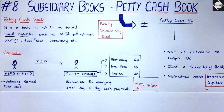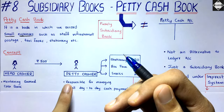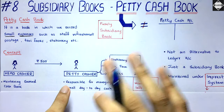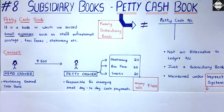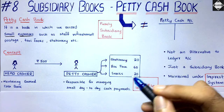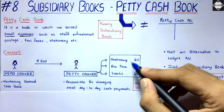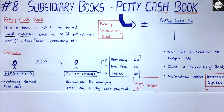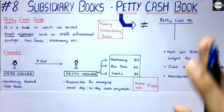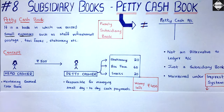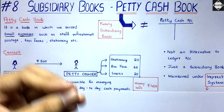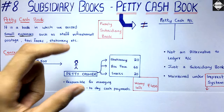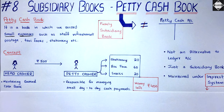So at the beginning of the period, the head cashier will give cash — say 500 rupees — to the petty cashier. The petty cashier gets money only from the head cashier; not from customers or any other source. The head cashier says: keep this 500 and whatever small expenses happen during the period, pay those and keep the receipts. During the week, expenses like stationery, bus fare, and snacks for employees are incurred — say 20 rupees, 60 rupees, 20 rupees — totaling 100 rupees. So the money left after the week is 400 rupees.